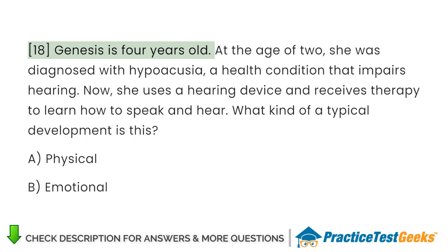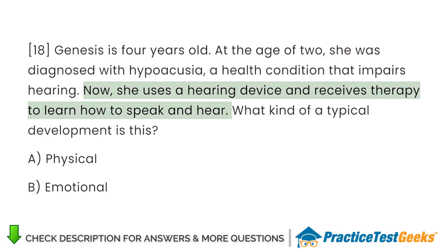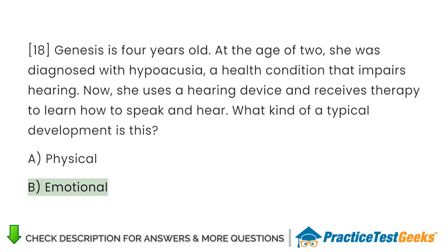Genesis is 4 years old. At the age of 2, she was diagnosed with hypoacusia, a health condition that impairs hearing. Now she uses a hearing device and receives therapy to learn how to speak and hear. What kind of atypical development is this? A. Physical B. Emotional